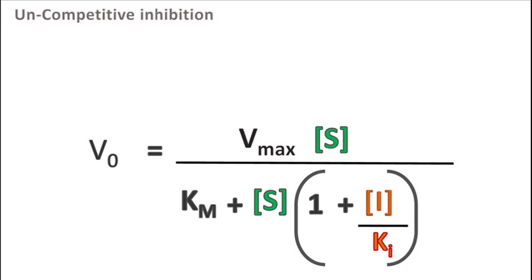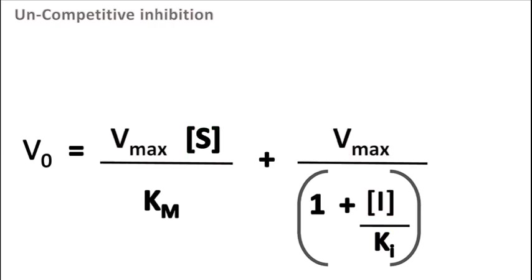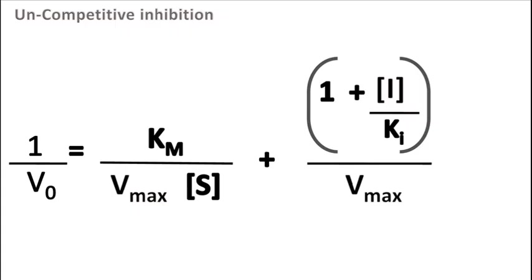Now let's try to plot the Lineweaver-Burk plot for this equation. Rearranging the terms on the right-hand side, we get V0 is equal to Vmax into S upon Km plus Vmax upon (1 plus I upon Ki). Inverting this equation, we get 1 by V0 is equal to Km upon Vmax into S plus (1 plus I upon Ki) upon Vmax.